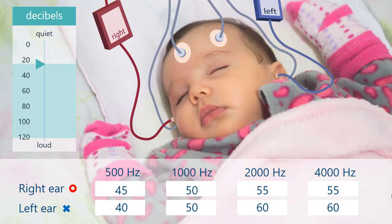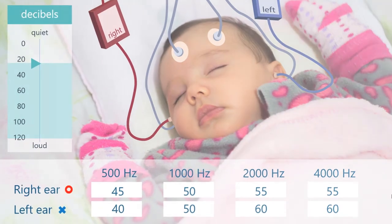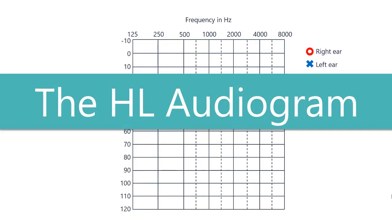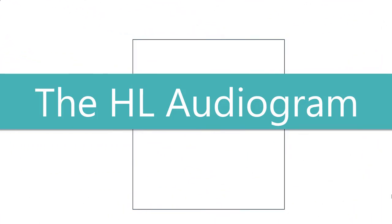By putting those numbers on a graph called the audiogram, we can get a better idea about how a child hears and also about what we can do to help. The HL Audiogram is a chart that helps us put the results of a hearing test into perspective. It will help to break this chart down into its parts. As we put the chart back together, you will see how useful it can be.